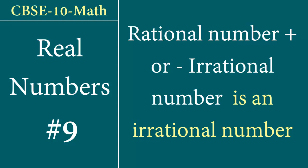Hello and welcome to Real Numbers video number 9. Today we are going to find out how to prove that when we have a rational number and we either add or subtract an irrational number from it, the resultant number is going to be an irrational number.